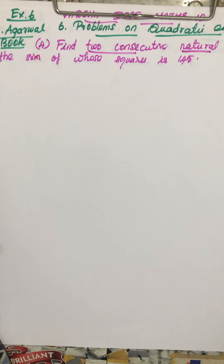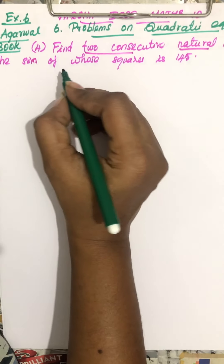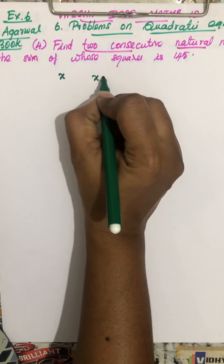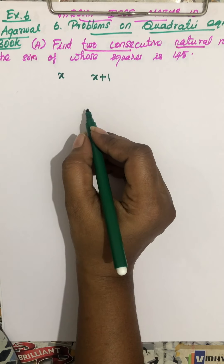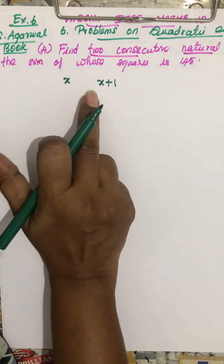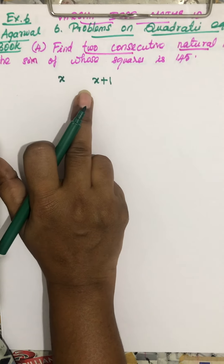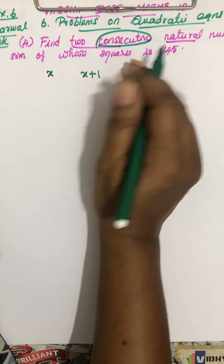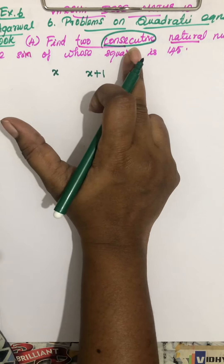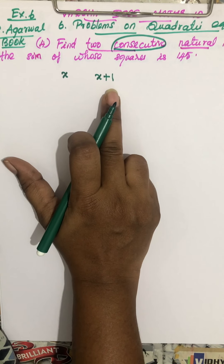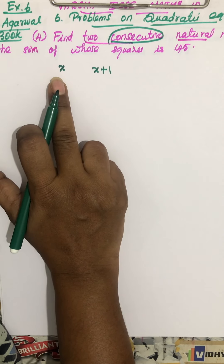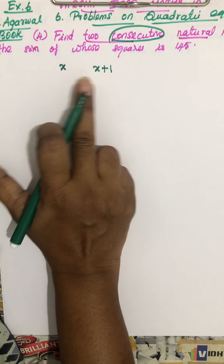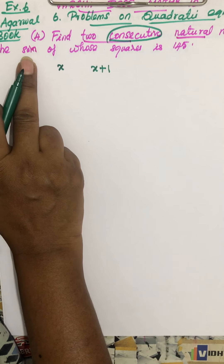So how will you take the two numbers? If the first number is x, the next number can be taken as x plus one. So whenever you have the word 'consecutive,' you take x and x plus one — these are the two consecutive natural numbers.